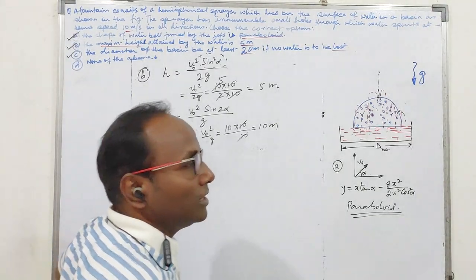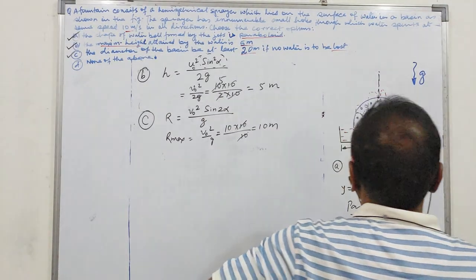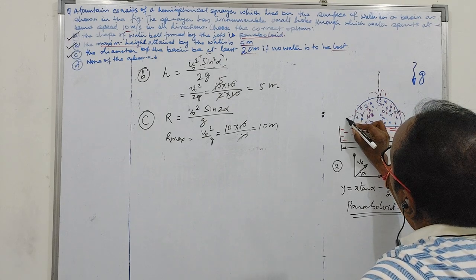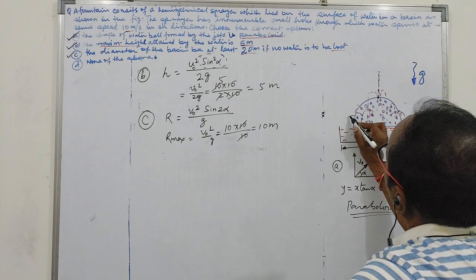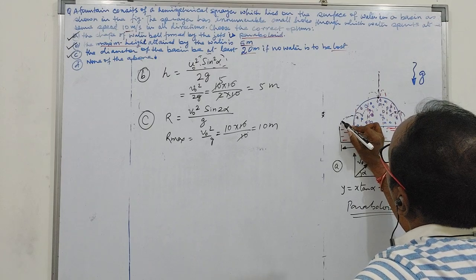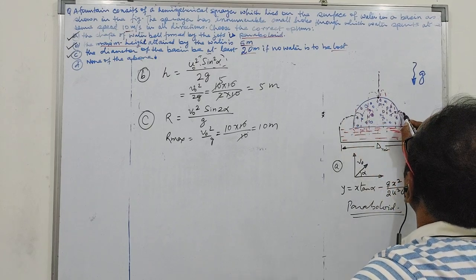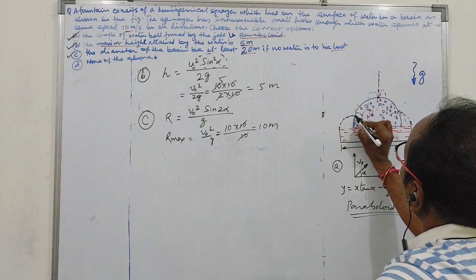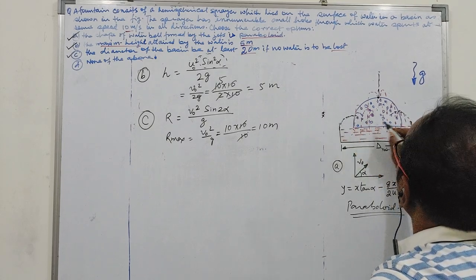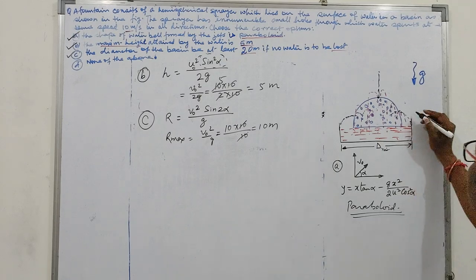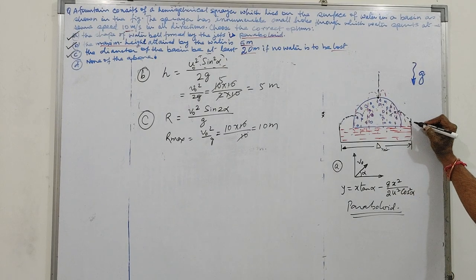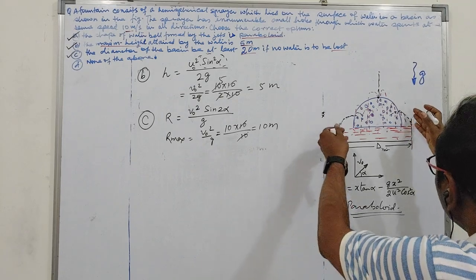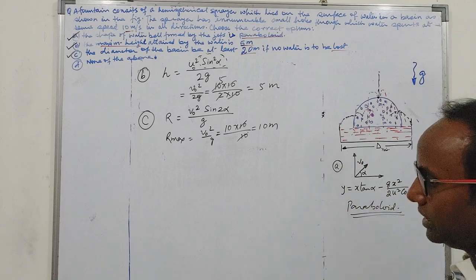10 meter, it means any water coming out of it can travel in horizontal direction to a maximum of 10 meter. The boundary should be made in such a way so that it should be within the boundary, so it will not come out of it, rather it will fall within and go back in the reservoir.